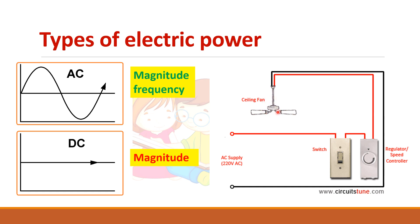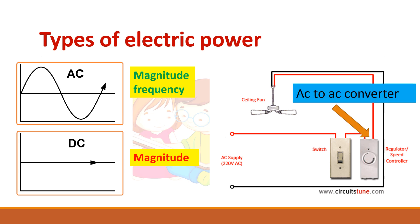Consider a ceiling fan connected to AC supply through a switch and a regulator which controls the speed of the motor. This ceiling fan is an induction motor, which is an AC motor. The fan regulator performs the function of an AC-AC converter — the input is AC, the output is also AC, but you can control the magnitude of the output voltage.